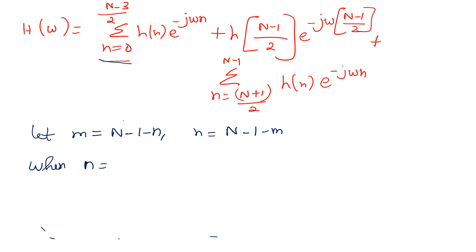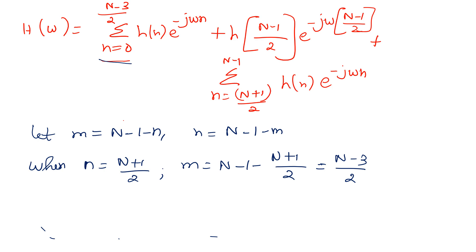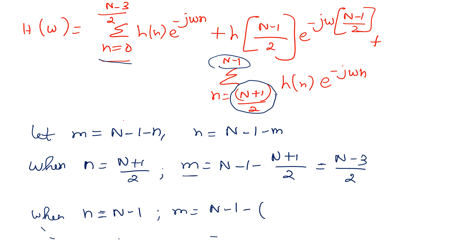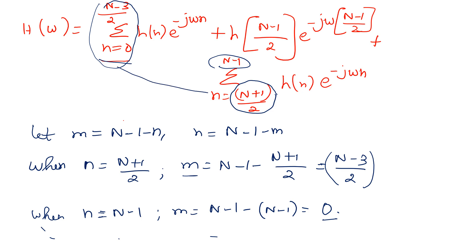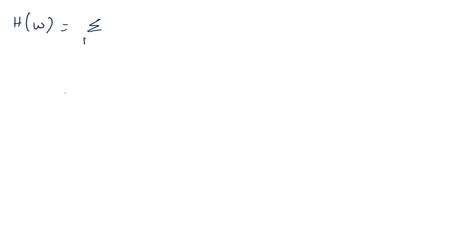Let me assume the substitution m equal to N minus 1 minus n, therefore I can rewrite n as N minus 1 minus m. When n equals (N+1)/2, m becomes N minus 1 minus (N+1)/2, which simplifies to (N-3)/2. When n equals N minus 1 (the upper limit), m becomes N minus 1 minus (N-1), which gives 0. So m runs from 0 to (N-3)/2, and since both parts share this same limit, I can club these two expressions together.